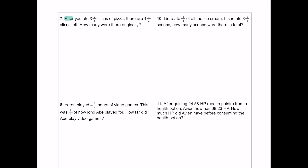Number seven: after you ate three and two-thirds slices of pizza, there are four and a half slices left. How many were there originally? I'll use P for pizza. We start with P slices, take away three and two-thirds, and there are four and a half left: P - 3⅔ = 4½. To go back in time, we add three and two-thirds to both sides — like putting the slices back.